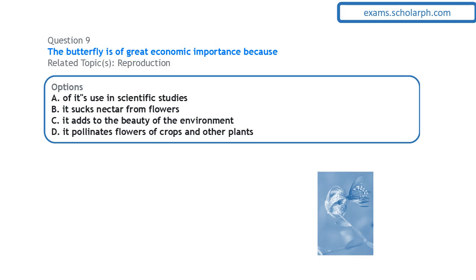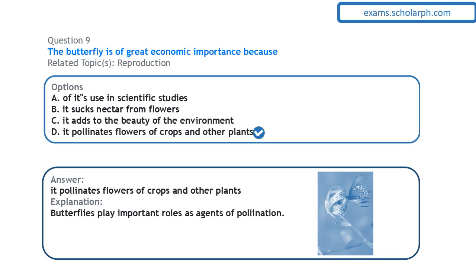The butterfly is of great economic importance because it acts as a pollinating agent. It pollinates flowers of crops and other plants. Pollination is the transfer of pollen grains from the male flower to the female flower. When a butterfly visits a flower to suck nectar, pollen grains of that plant stick to its body. When the butterfly moves to another flower, those pollen grains are deposited, facilitating pollination.